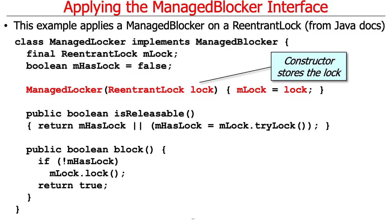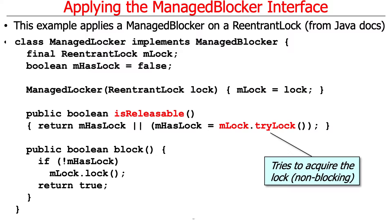The way this works is that the constructor is passed a reentrant lock, which it stashes away in a local field. The isReleasable method is called to see if it can acquire the resource without having to block — if you don't have to block, there's no need to create more threads. In this case, the isReleasable method tries to acquire the lock using tryLock, which returns a boolean indicating whether the lock was acquired without blocking.